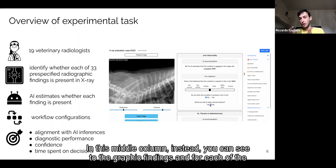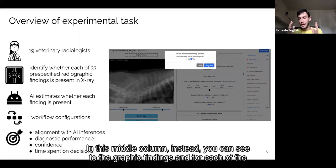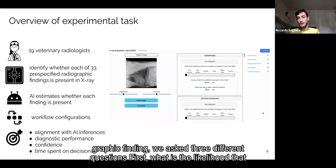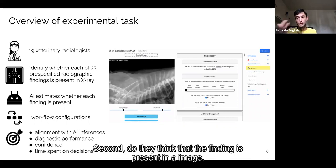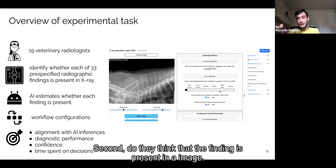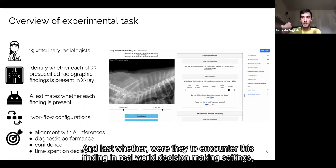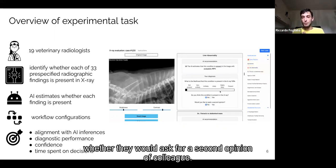In this middle column, you can see two radiographic findings. And for each radiographic finding, we asked three different questions. First, what is the likelihood that the condition is present? Second, do they think that the finding is present in the image? And further, were they to encounter these findings in real-world decision-making settings, were they to ask for a second opinion of a colleague?